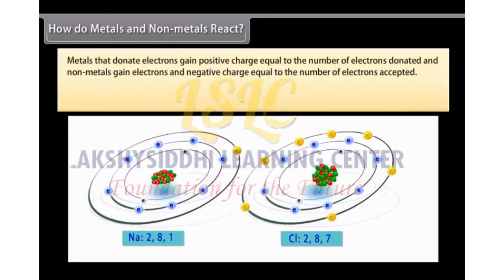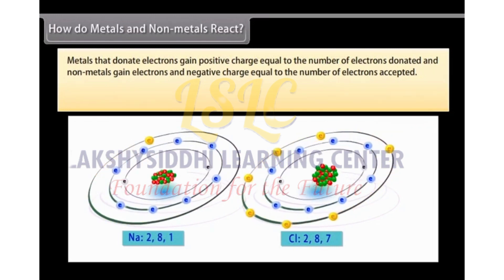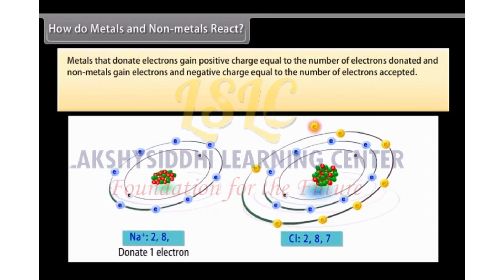When a metal atom donates 1, 2 or 3 electrons from its valence shell to another non-metal atom that has the ability to accept these electrons, it is known as electrovalency.